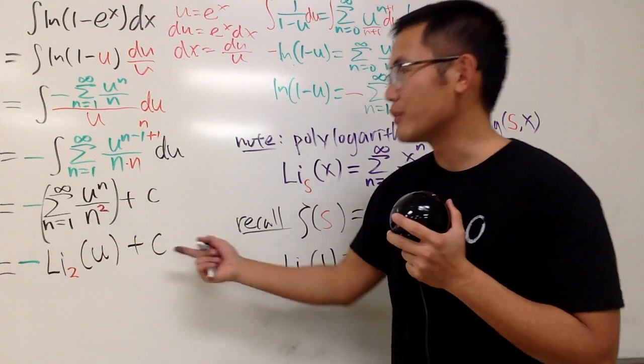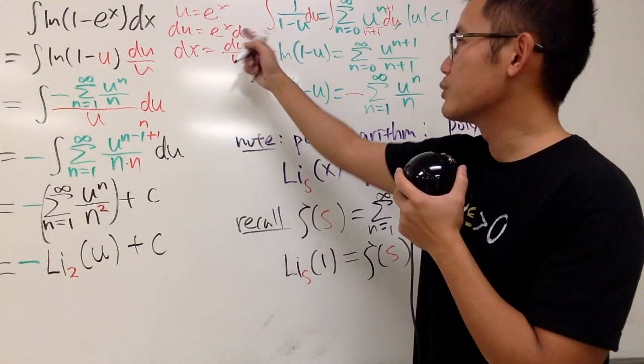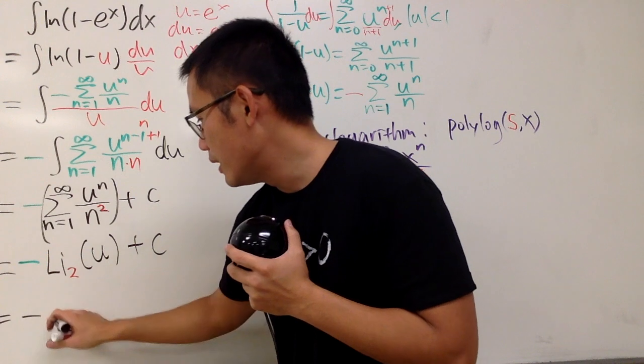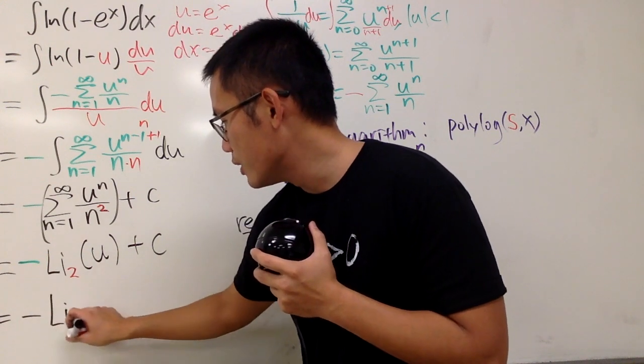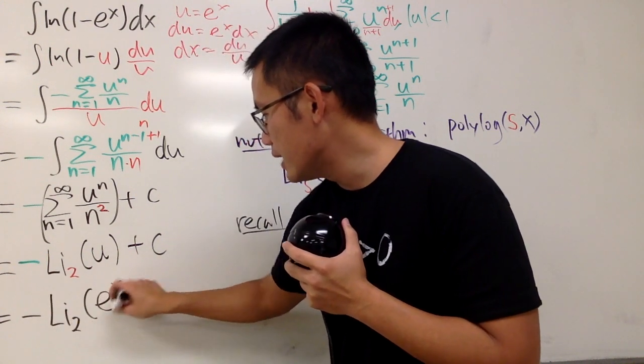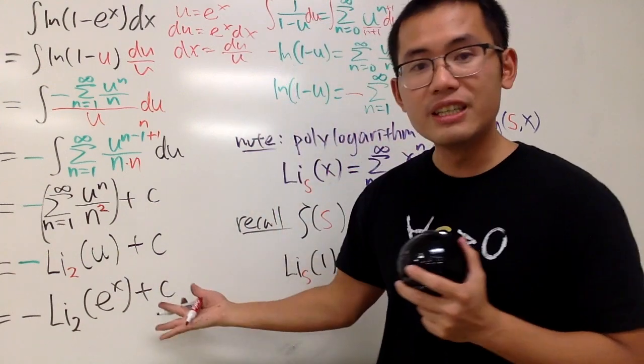No, because we have to go back to the x world, and the x world is e to the x for the u. So, this is negative li 2 of e to the x, and then plus c, just like that.